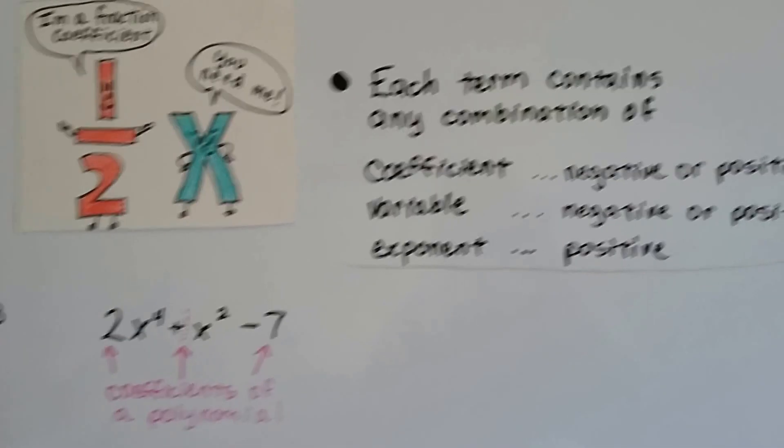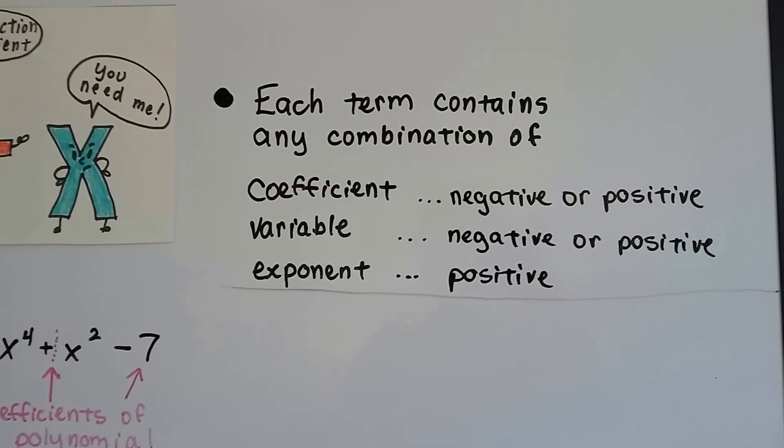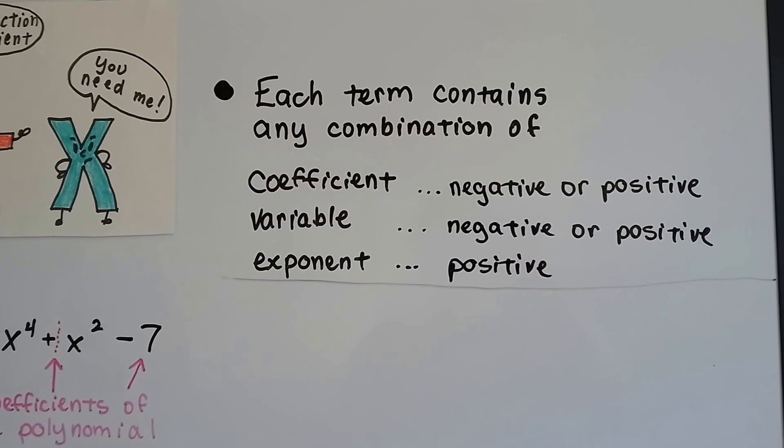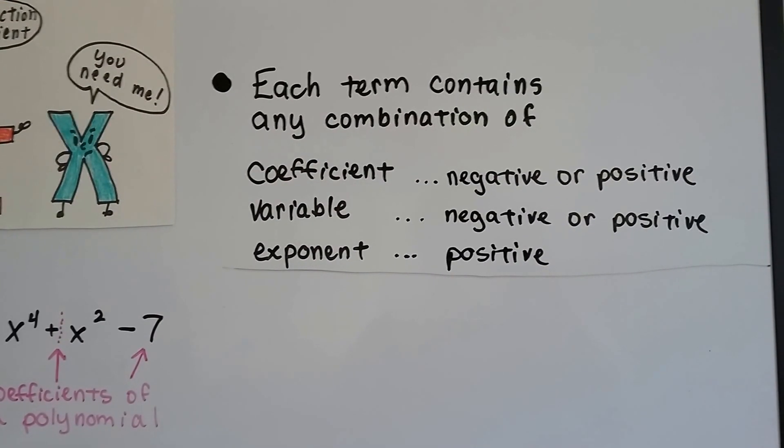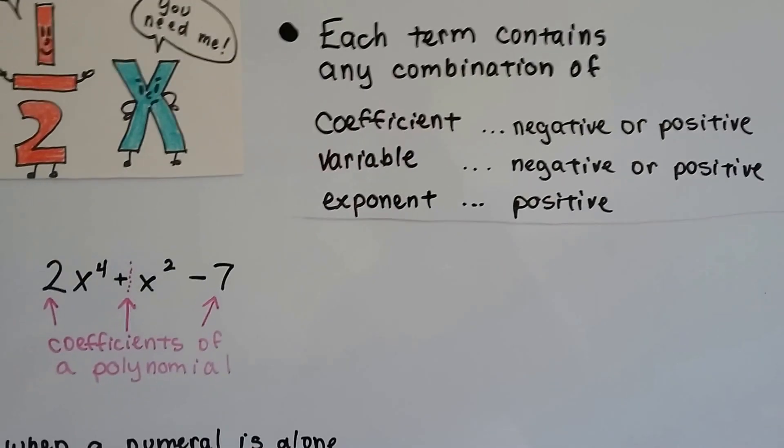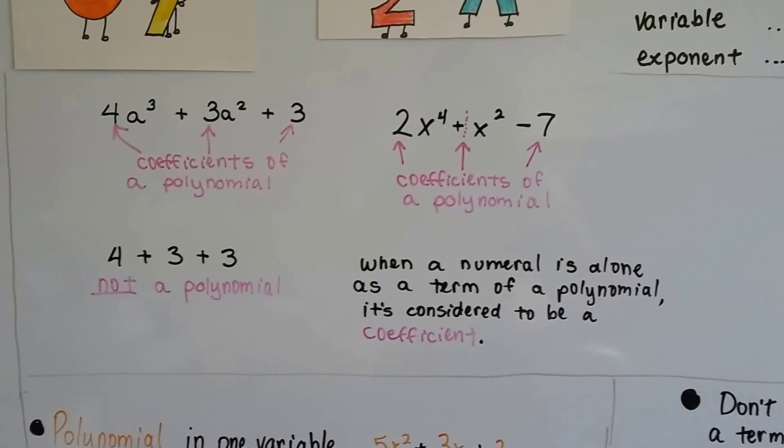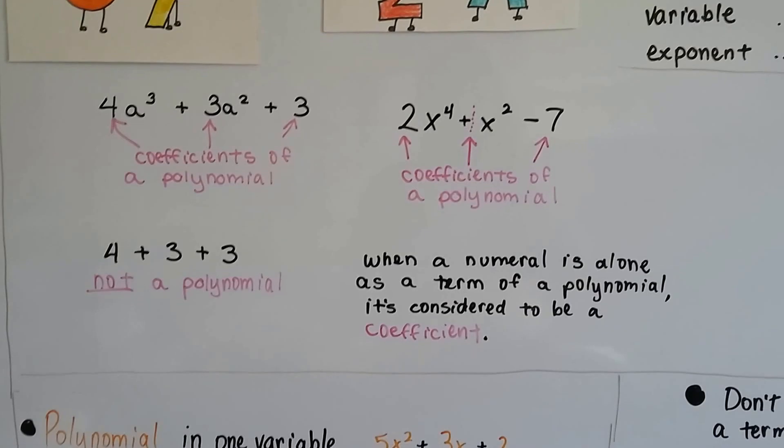So each term contains any combination of coefficients which are negative or positive, variables that are negative or positive, but exponents have to be positive. Because, remember, a negative exponent is a fraction. And we'll get into this a little bit more. But for right now, I just want you to be able to identify the coefficients of a polynomial. It's all these big, whole-looking numbers, see?